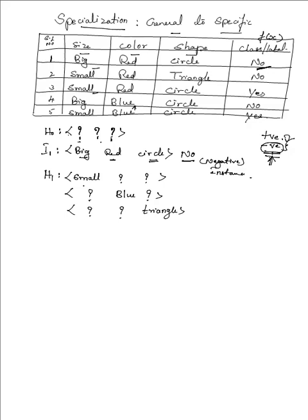If I give (small, ?, ?) it outputs 'no.' With (?, blue, ?) — we have red in the instance, so we get 'no.' With (?, ?, triangle) — we have circle in the instance, so we get the negative instance. So we now have three hypotheses total. The hypothesis space has been generated at this point.